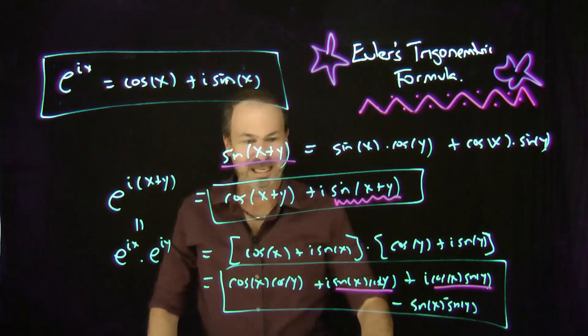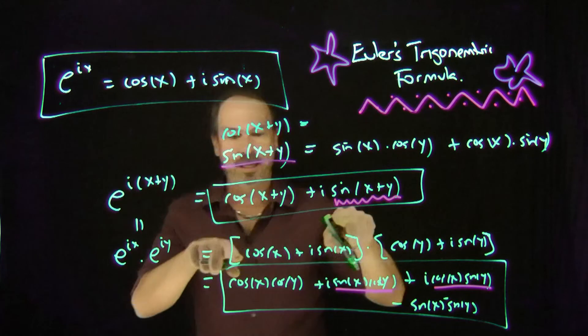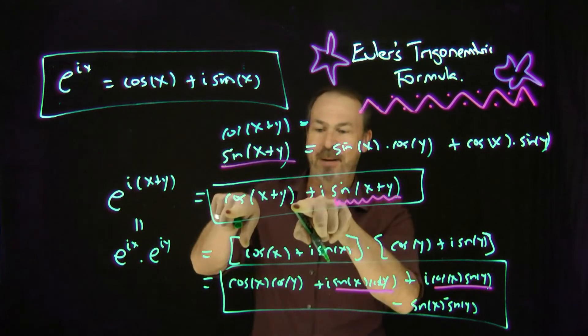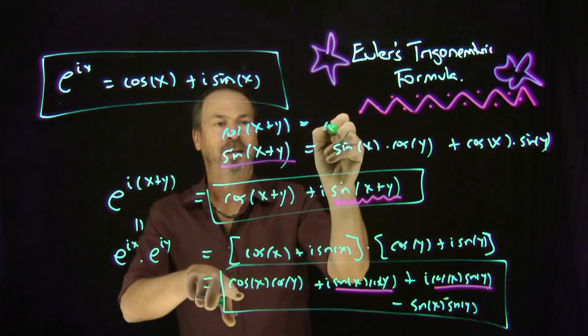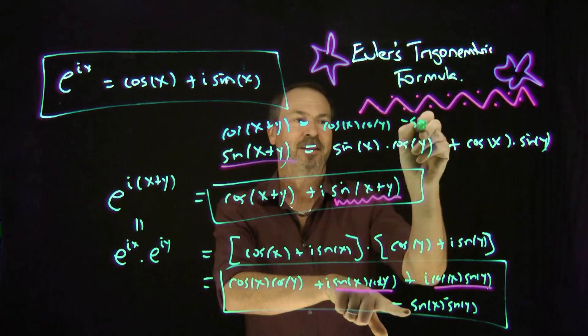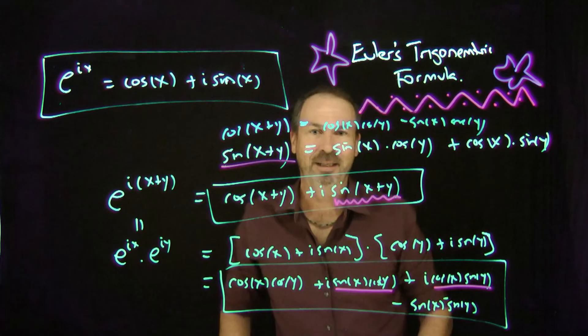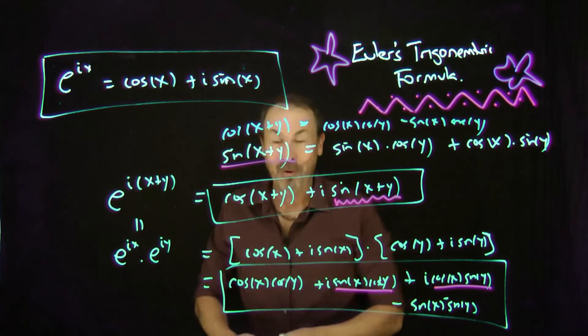In fact, as a bonus, I can see right now from my formula, cos of x plus y must be the non-i part. Must match this non-i part: cos of x cos of y minus sine x sine y. Bingo. And I bet that's the formula I was memorizing as a kid. Whoa!